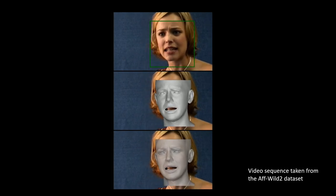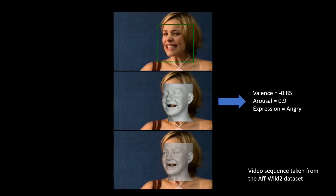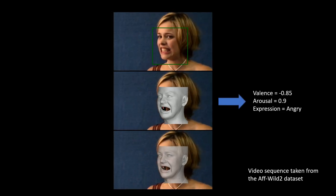We achieve this by introducing a novel deep perceptual emotion consistency loss during training that rewards the similarity of the reconstructed 3D expression and the expression depicted in the input image. The reconstructed geometry captures sufficient information for in-the-wild emotion recognition, with an accuracy that is on par with the best image-based methods.